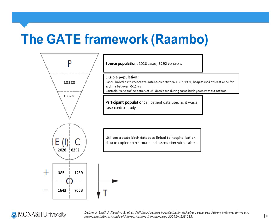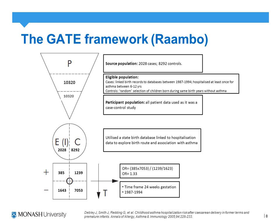Dividing cases and controls by exposure: of the 2,028 cases, 385 had a caesarean section and 1,643 did not. Of the 8,292 controls, 1,239 had a caesarean section and 7,053 did not. Calculating the odds ratio gives 1.33, suggesting that caesarean delivery — both term and preterm — is associated with a 33% increase in the risk of childhood asthma hospitalisation.